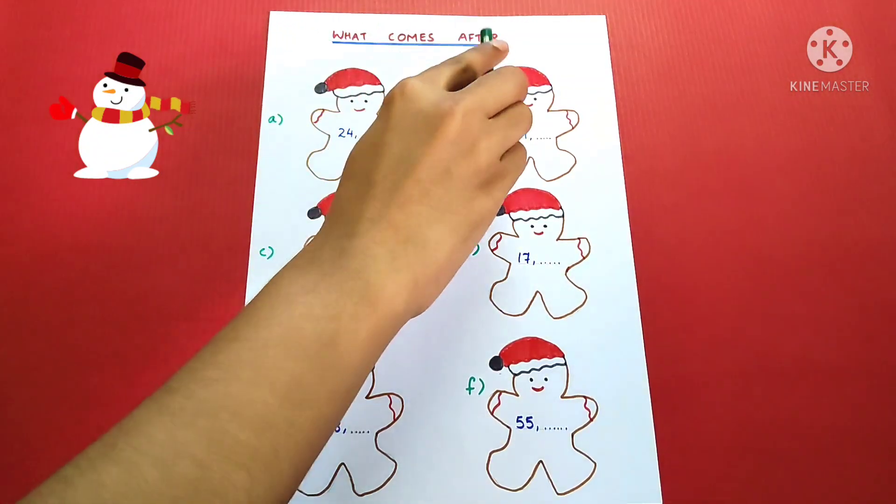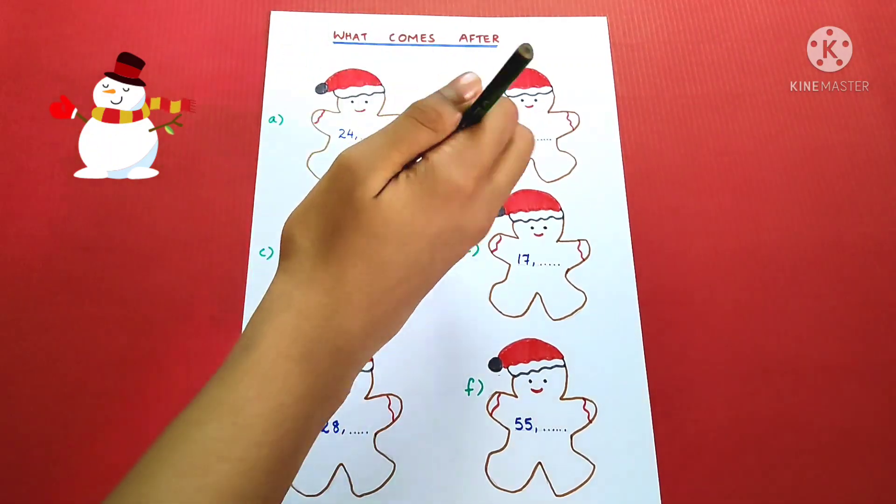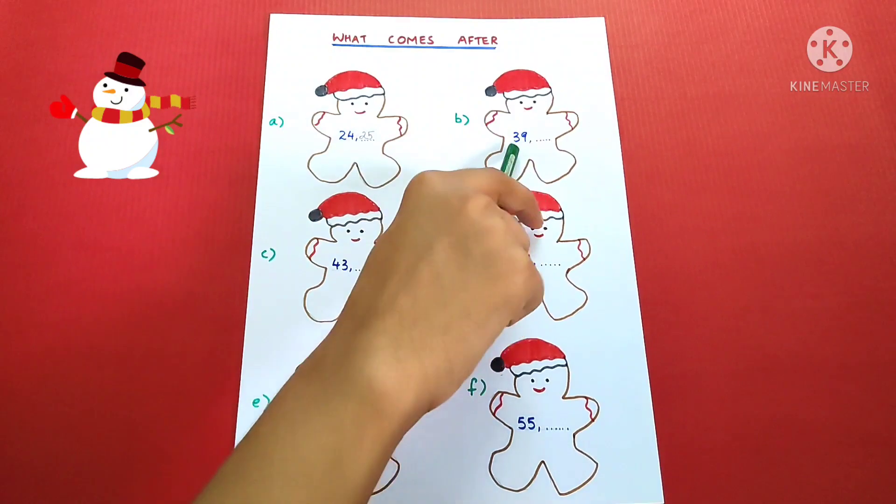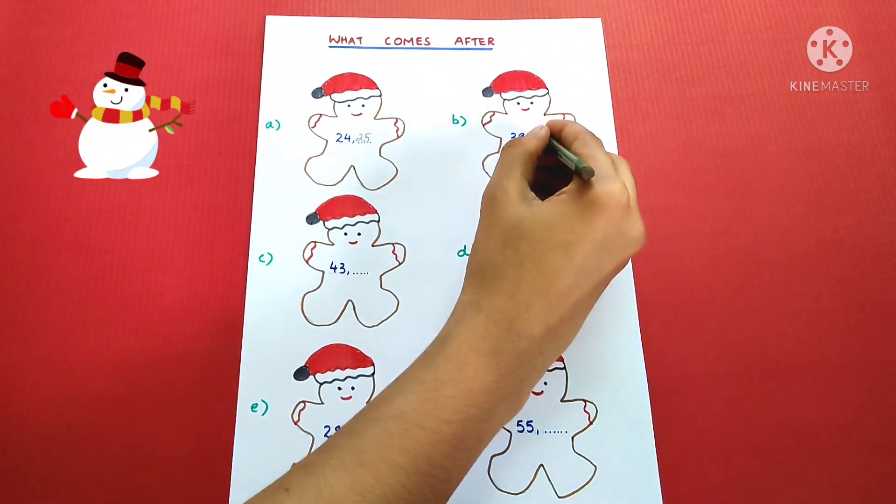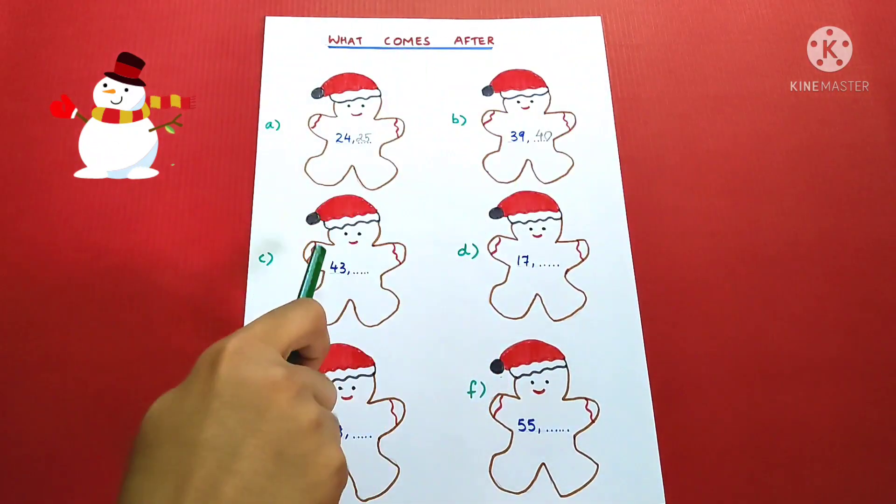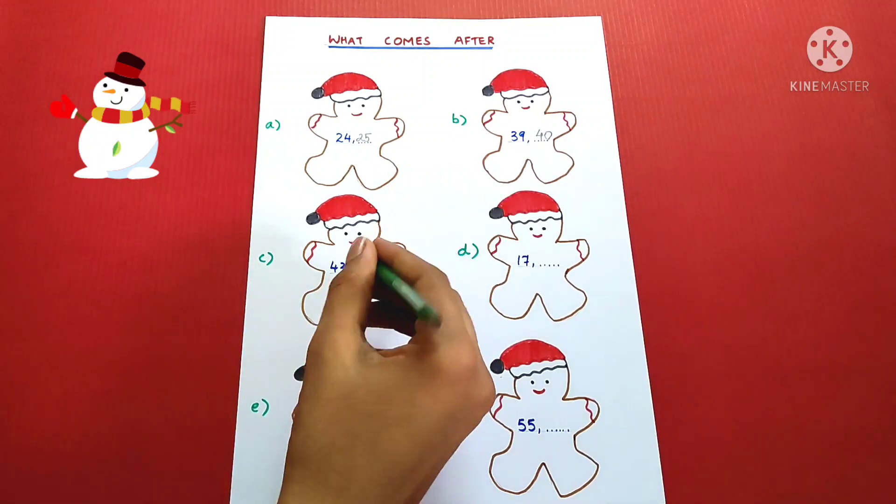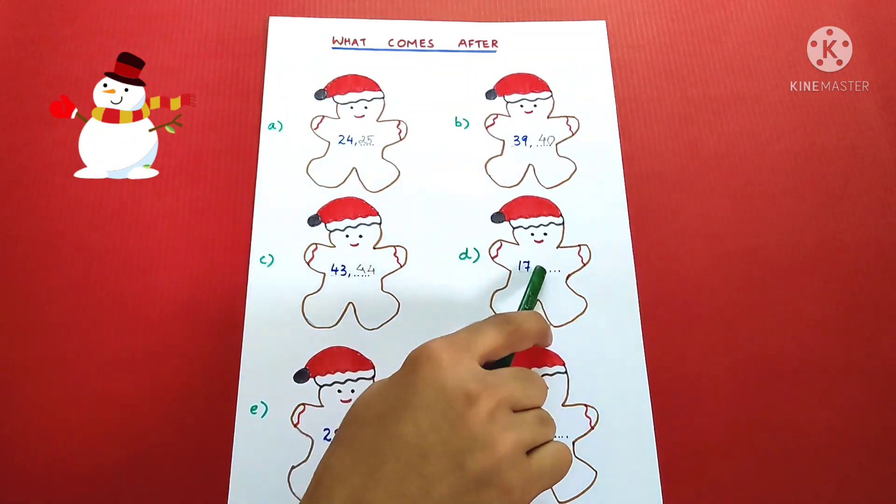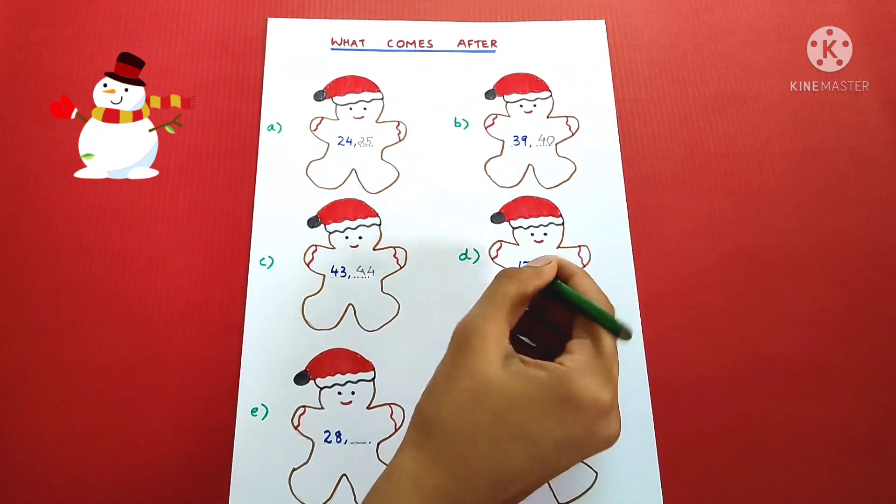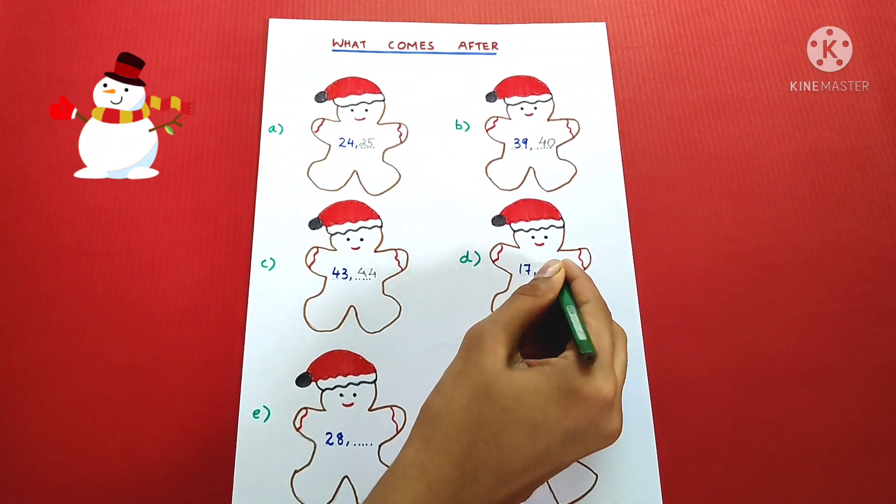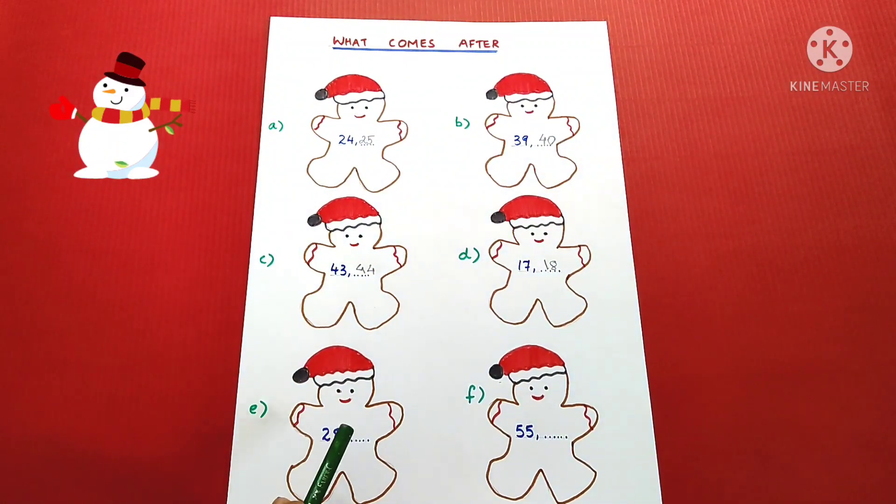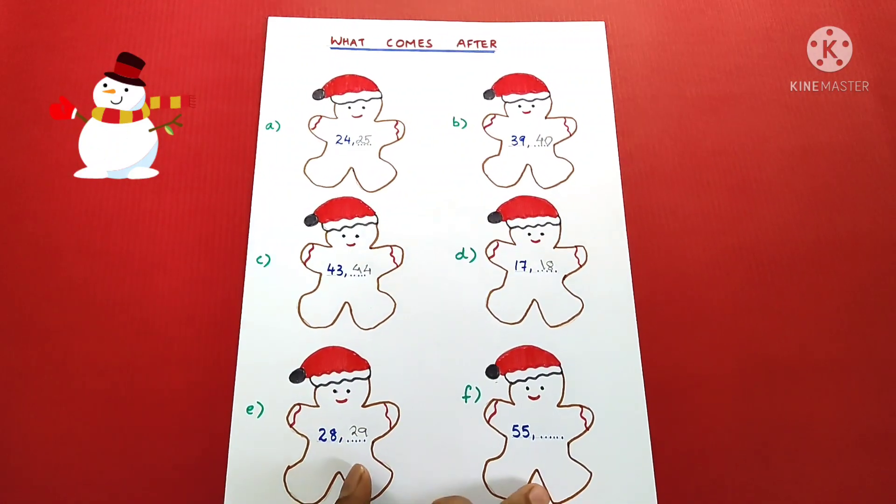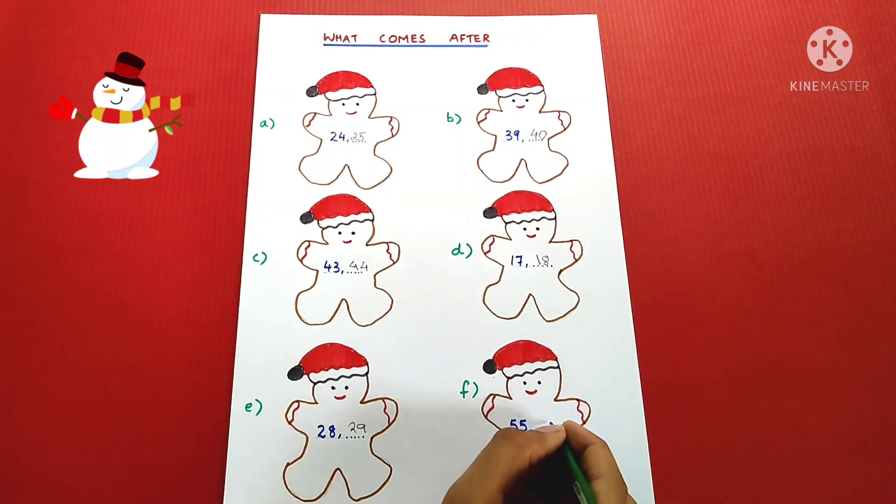What comes after 24? 25. 39? 40. 43? 44. 17? 18. 28? 29. 55? 56.